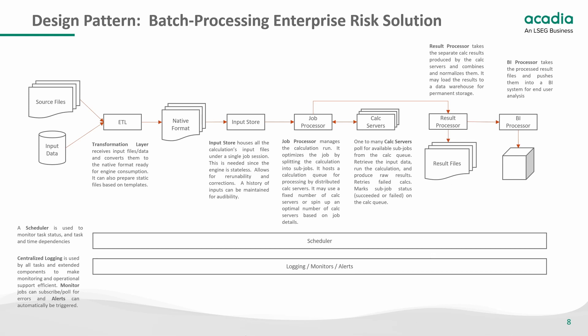Finally, to make results available and usable by end users, a reporting layer is needed. In this case we have a BI processor that takes the processed results and pushes them into an OLAP BI system for end user analysis. A scheduler monitors task statuses and dependencies, moving the orchestration from task to task until the entire workflow is complete. Centralized logging is used by all tasks to make monitoring and operational support efficient. Alerts can be triggered during the entire workflow if any failures occur that require human intervention.